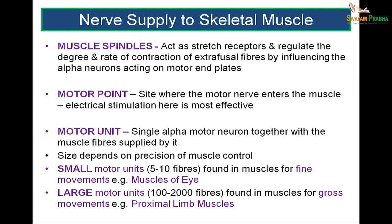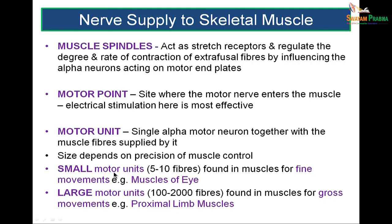Motor units can be divided into small motor units (5–10 fibers) found in muscles for fine movement like muscles of the eye, and larger motor units (100–2000 fibers) found in muscles for gross movements like the proximal limb muscles.